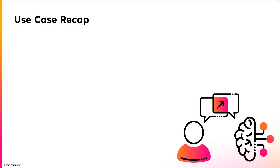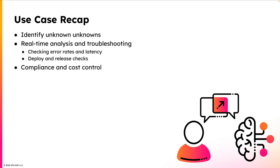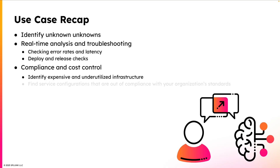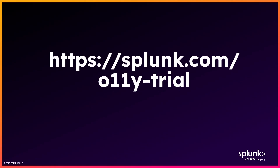To summarize, I'd like to recap the use cases we've demonstrated. Number one is identifying unknown unknowns in the environment. The second use case, and one of the primary use cases, is real-time analysis and troubleshooting — this can include checking error rates and latency of services, as well as analyzing and comparing deployments and releases. We also utilized the Assistant for compliance and cost control, including auditing AWS EC2 instances and whether they're underutilized. These use cases demonstrate the flexibility and power of the AI Assistant in Splunk Observability Cloud, and it will only get better from here. I hope you enjoyed this video — if you're interested in trying Splunk Observability Cloud yourself, you can navigate to this link to claim your free 14-day trial. Thanks for watching.